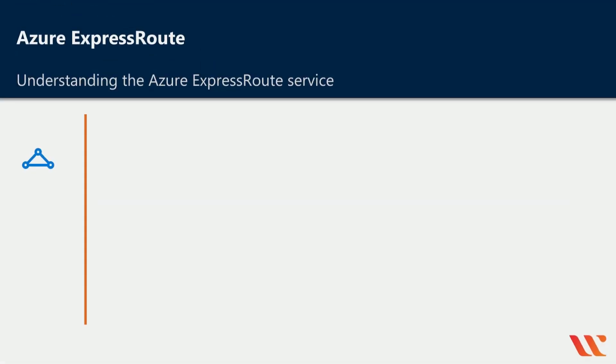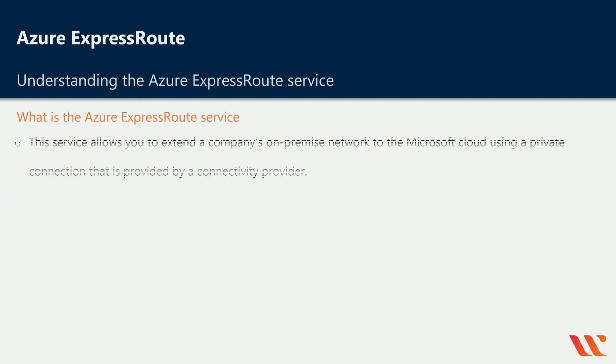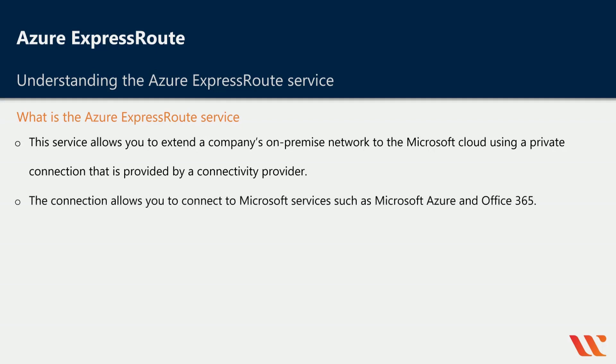In this chapter I just want to go through the Azure ExpressRoute service. This service allows you to extend a company's on-premise network onto the Microsoft cloud by using a private connection that is provided by a connectivity provider. The connection allows you to connect onto Microsoft services such as Microsoft Azure and Office 365.